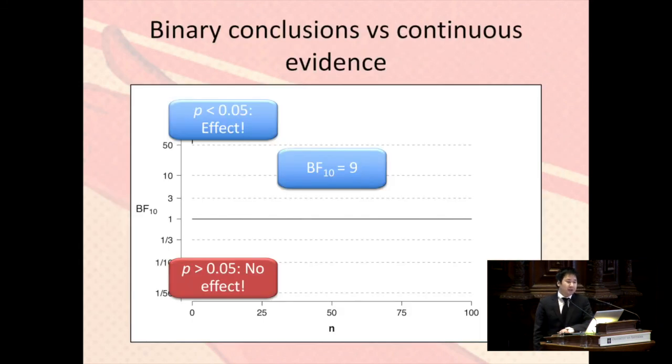So let's return to the problem here. The problem was that we used to have only there is an effect, there's no effect. And the Bayes factor can give you something in between. So here, there is an effect, and a Bayes factor of nine tells you it's nine times more likely that there is an effect than there's no effect, that the data would generate from that there is an effect than there's no effect.